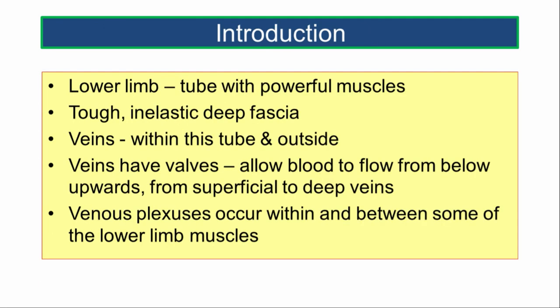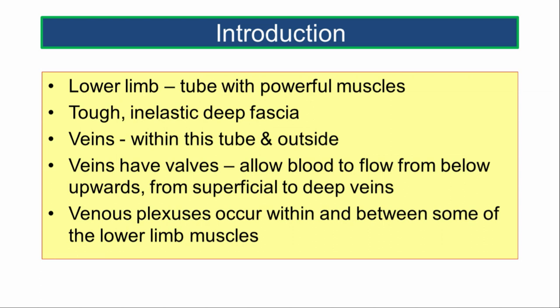The lower limb is a tubular structure with powerful muscles. These muscles are held together by a tough inelastic deep fascia which covers the limb like a stocking — that is what we call the fascia lata. The veins of the lower limb lie within this tubular structure or outside the fascia lata. Thus we can classify them as superficial veins, which lie in the superficial fascia, and deep veins.